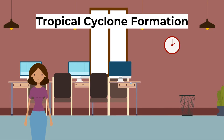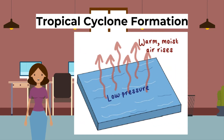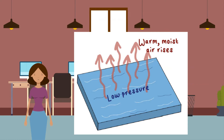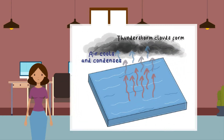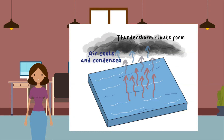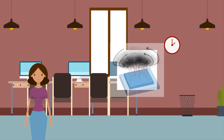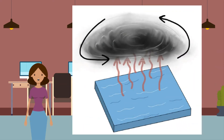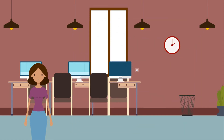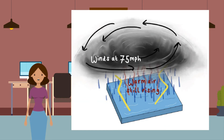Tropical cyclone formation: Step one — warm moist air rises, leaving an area of low pressure below. This causes warm air from the surroundings to move into the low pressure area and rise, so warm air is constantly rising and accumulating in the atmosphere. Step two — when the warm air rises it eventually cools; this moist air will then condense and form large thunderstorm clouds. Step three — the whole system spins due to the Coriolis effect: clockwise in the southern hemisphere, anti-clockwise in the northern hemisphere.